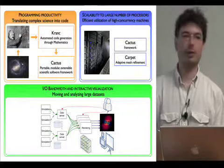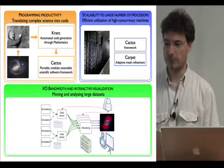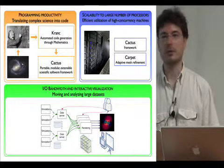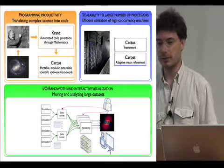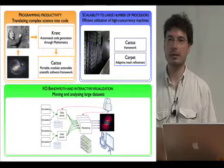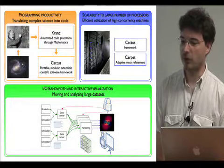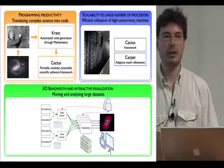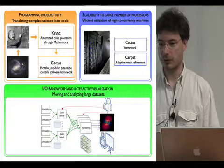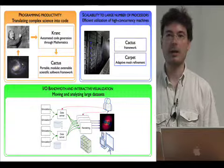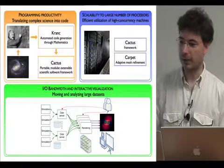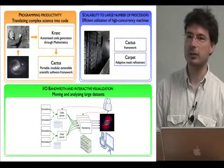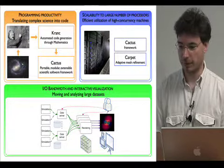We use the CACTUS framework to couple different physics modules, and once the code has been created, it is necessary to execute the code in a scalable manner on large systems. In this demonstration, we are using the Ranger supercomputer in Austin, Texas. We are running on 2,000 cores of Ranger with a highly scalable code using the CACTUS framework and the carpet adaptive mesh refinement infrastructure that we have developed for this.